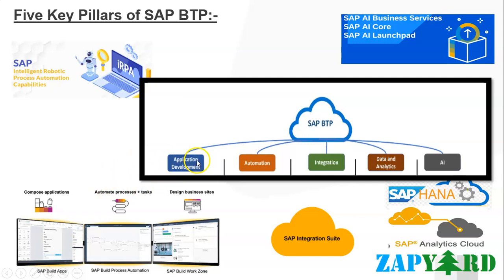First, let's get started with application development, where we talk about building and innovating with low-code, pro-code, or no-code development. Here we create a unified developer experience that allows every developer to build apps faster, no matter what the skill level is, and deliver personalized experiences through seamless integration and connectivity with SAP and third-party applications — that is, we talk about extensibility.